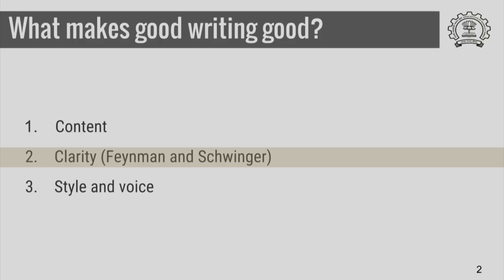But even when you have the same content, the next thing that matters is the clarity with which you communicate. At this point, I always like to tell the story about Feynman and Schwinger. Both are Nobel laureates. Both worked in the same area. In fact, they shared the Nobel Prize with another scientist from Japan for their work. In terms of content, the work that Feynman did and Schwinger did is identical, which was later shown by Freeman Dyson — even though they look very different, they are the same.